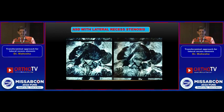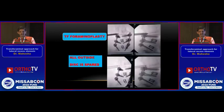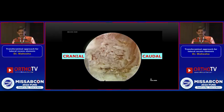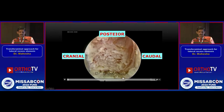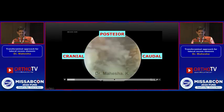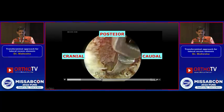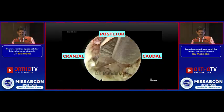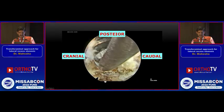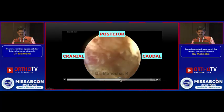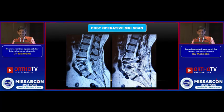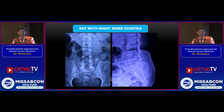I will show two or three cases. This is adjacent segment degeneration in an elderly lady with very severe right-sided pain. Endoscopic decompression was done; the disc was not entered. This is the facet which we are drilling. Medial to the facet is the root. I am using a curette here because this is an elderly osteoporotic patient. We have to remove the ligamentum flavum — once you remove it, you can see both the exiting and traversing roots very clearly. This is the post-operative MRI. The patient had excellent relief and did not require any revision fixation.